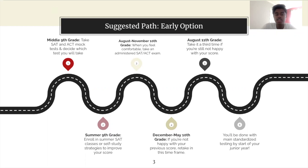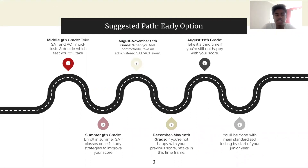In the middle of your ninth grade you can take SAT and ACT mock tests and decide which test you will take, as that can be a difficult decision for some students. The second step is to either enroll in summer SAT classes offered by some organization, or do some self-study to learn strategies to improve your score.